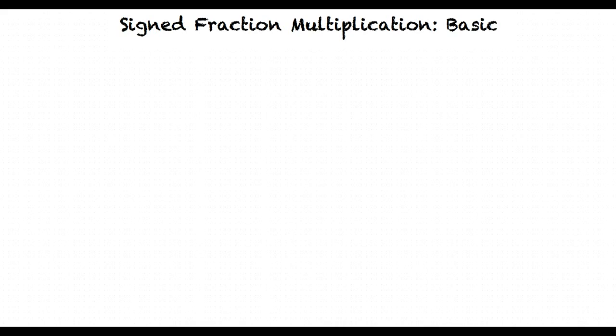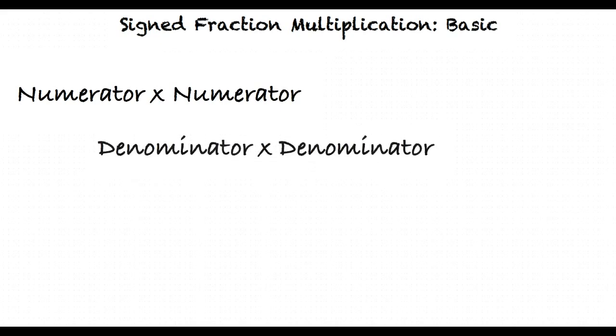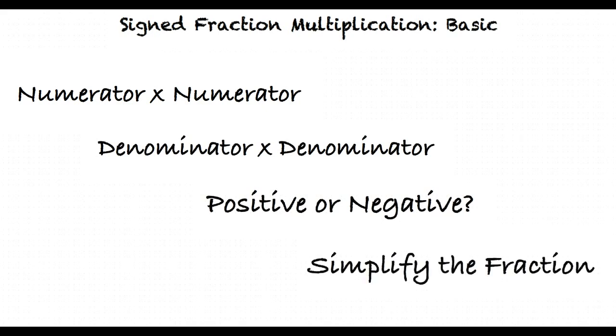To multiply two fractions, we first multiply the numerators, multiply the denominators, decide if the final answer should be positive or negative, and finally simplify.